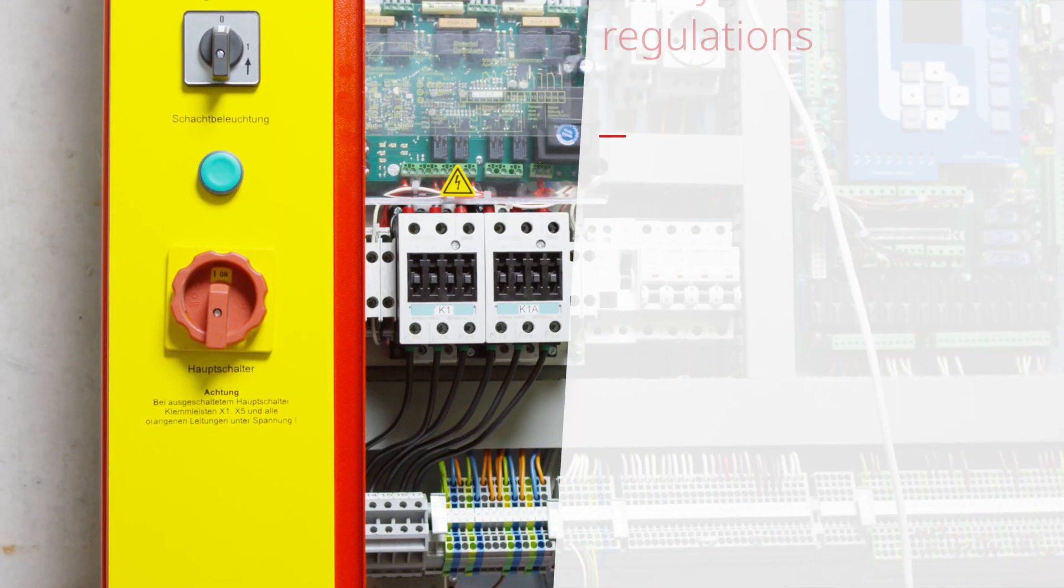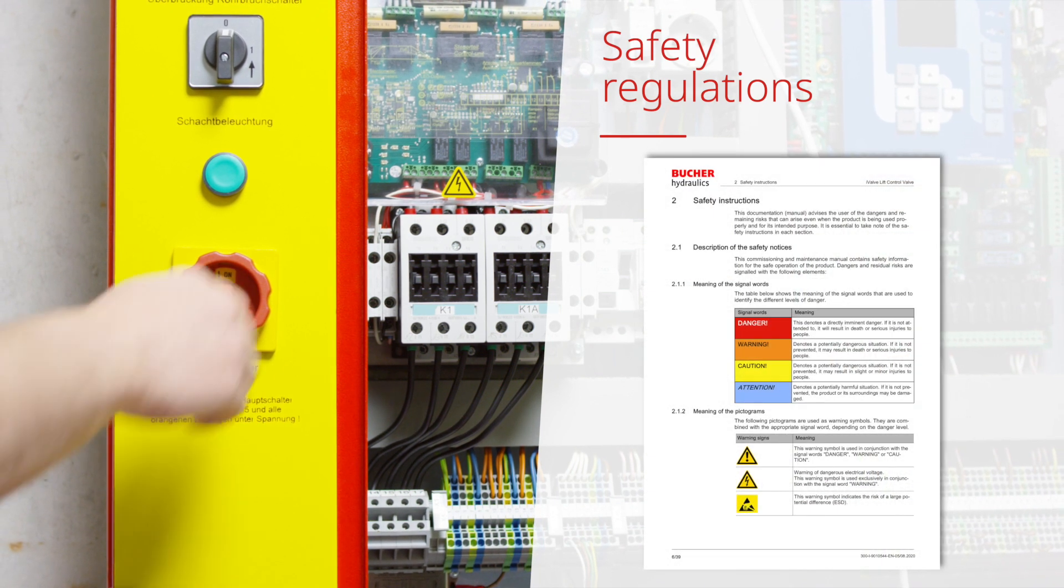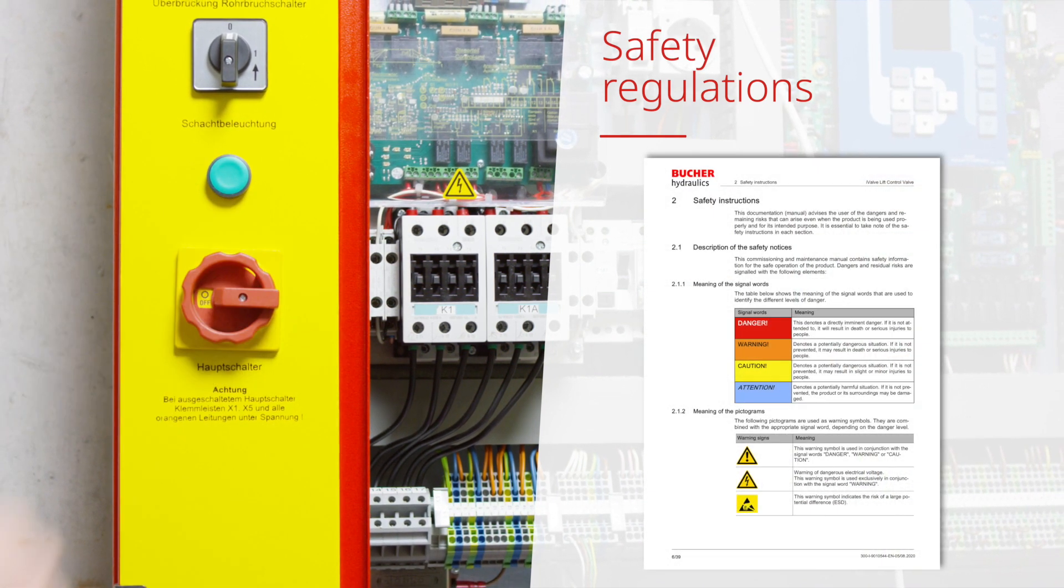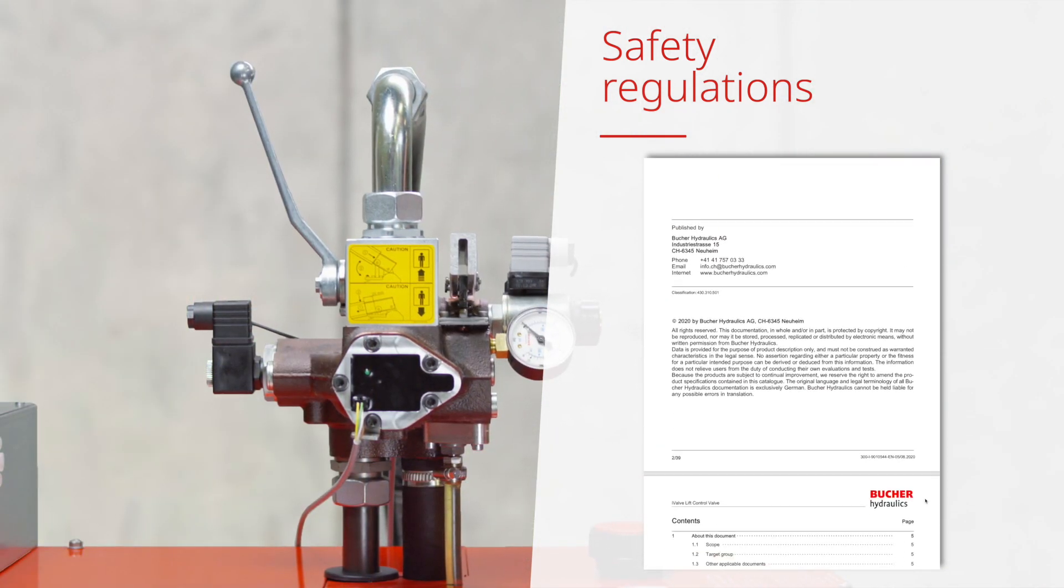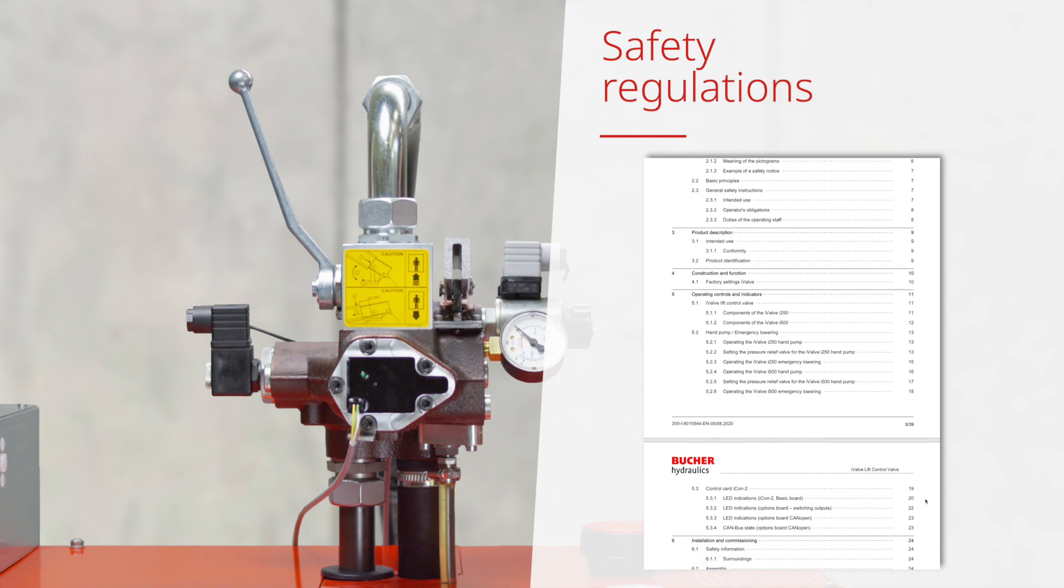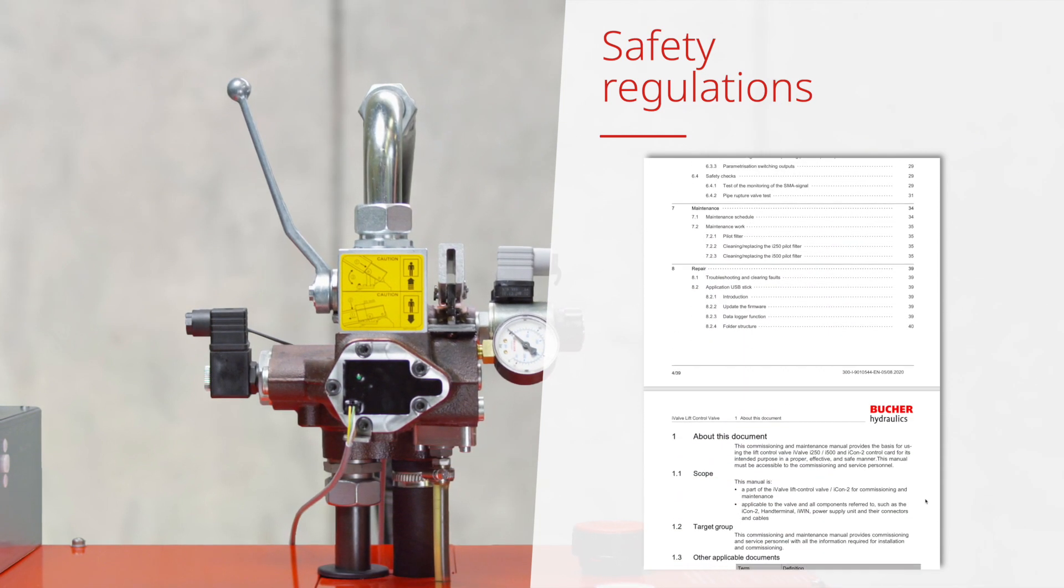Check leakage on emergency lowering. Before carrying out any work on the system or the lift control valve, the safety regulations and precautions must be observed. It is important to follow all the instructions and information in the associated documentation.